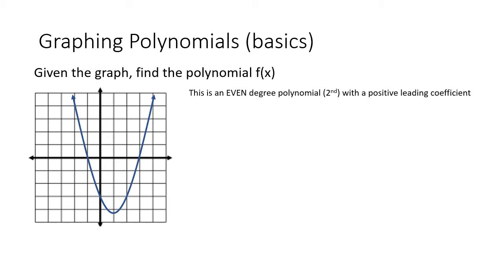We did a basic example of sketching a polynomial from its equation. What about the reverse — given the graph, can we find the polynomial? We think of f(x) as equal to a times (x - n)(x - m), where each factor corresponds to an x-intercept, and a is how vertically stretched the graph is — the same a value from y = ax² + bx + c.